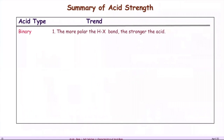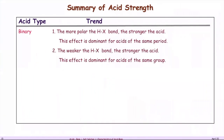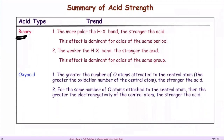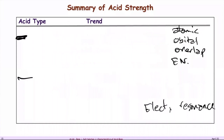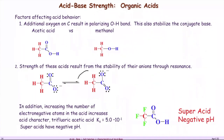Here is a summary of acid trends. For binary acids, you look at atomic orbital overlap and electronegativity — those are the two main criteria. For oxy acids, you're not looking at atomic orbital overlap; instead you look at electronegativity, resonance, and solvation — how water stabilizes the products.